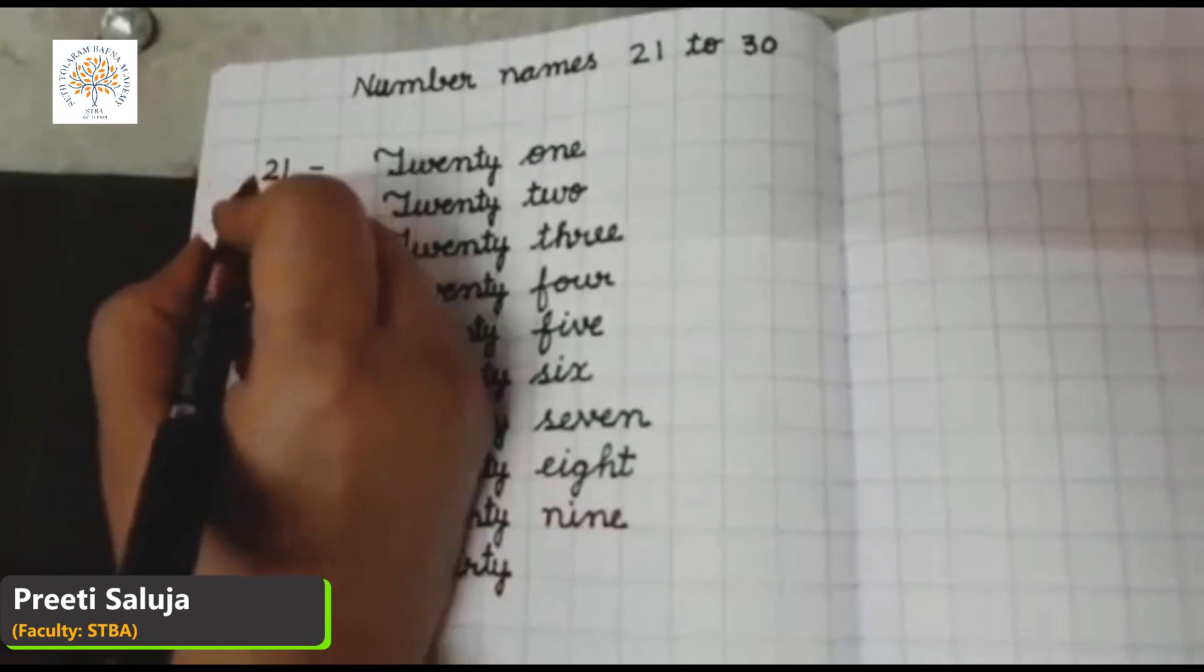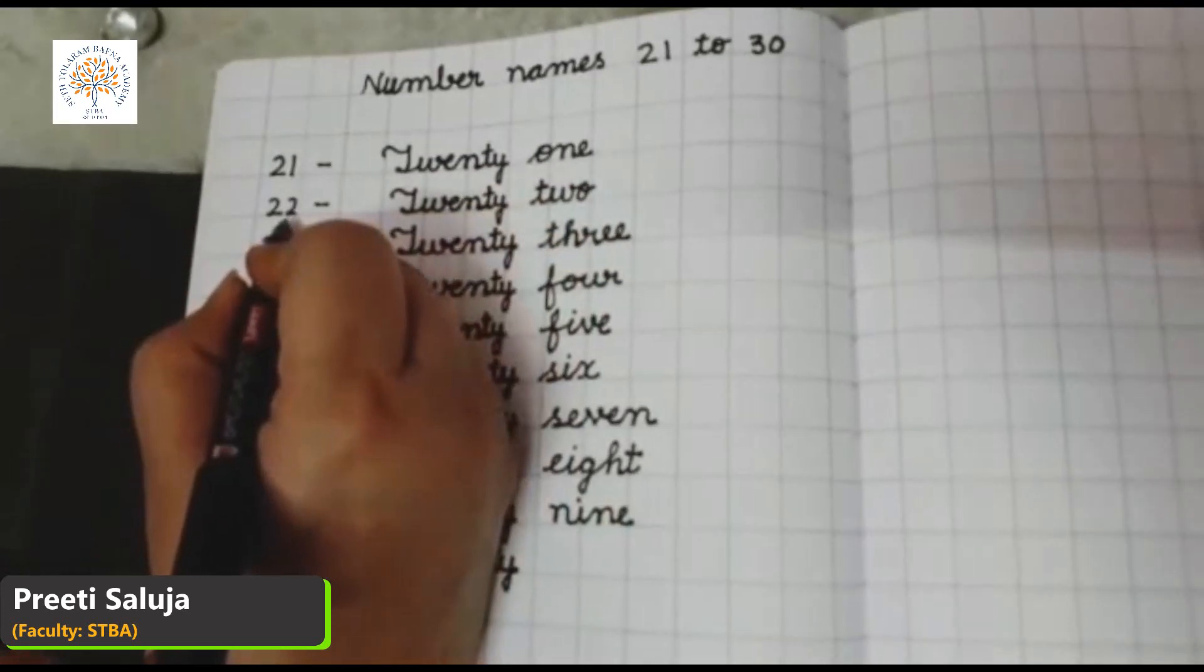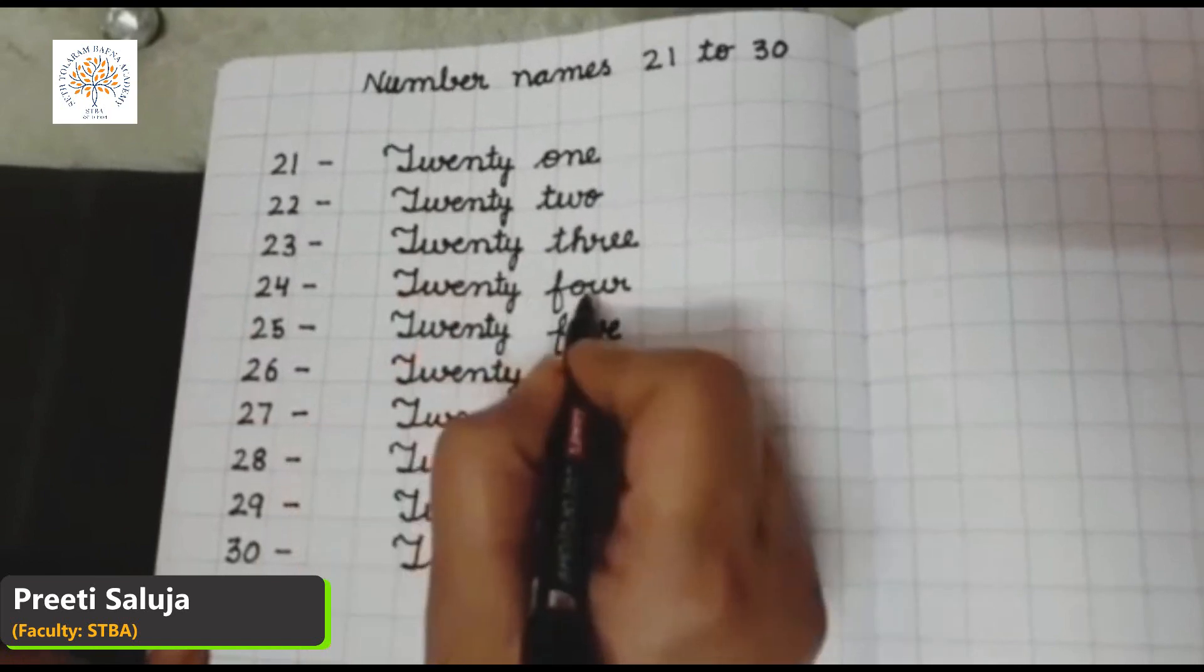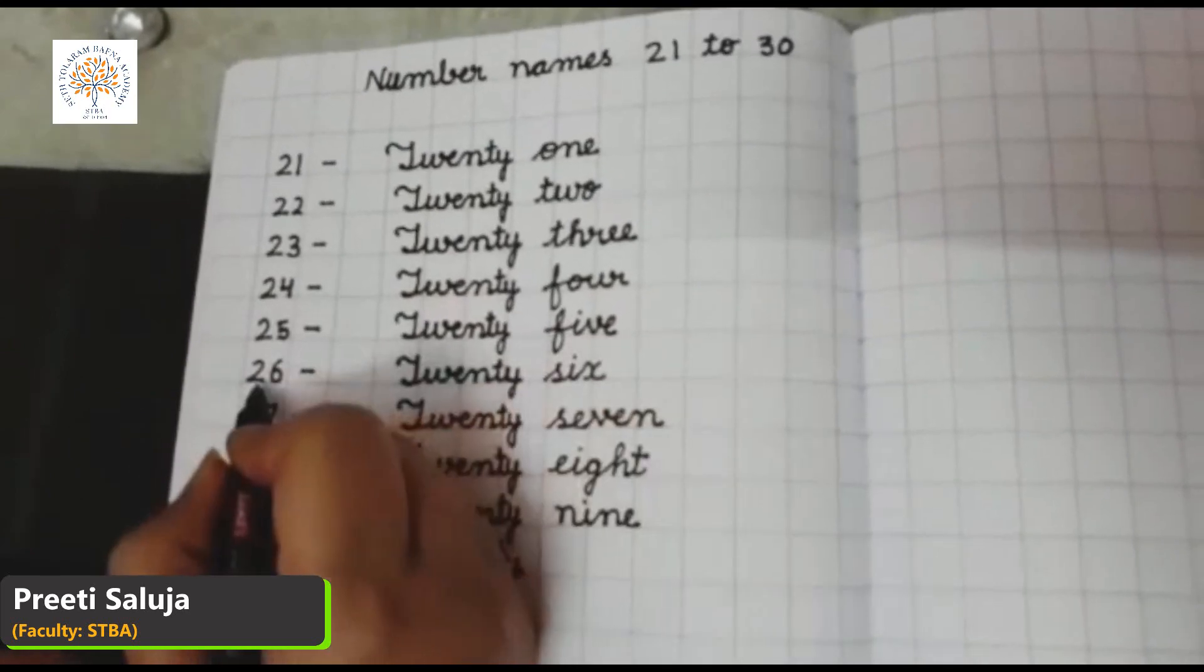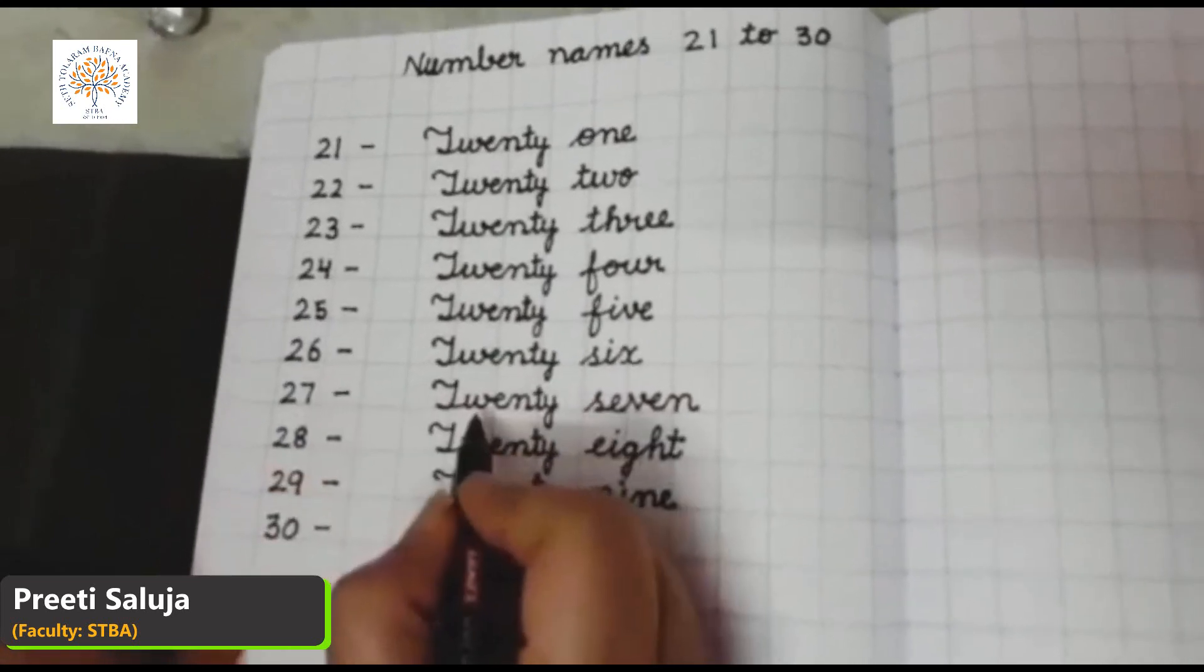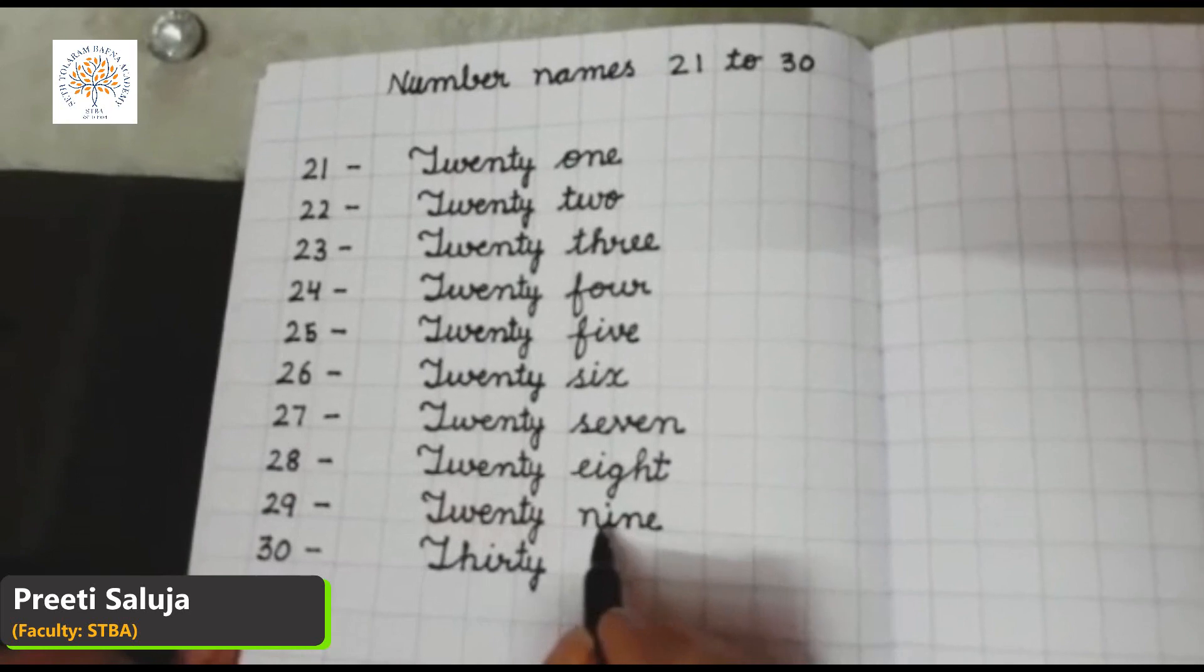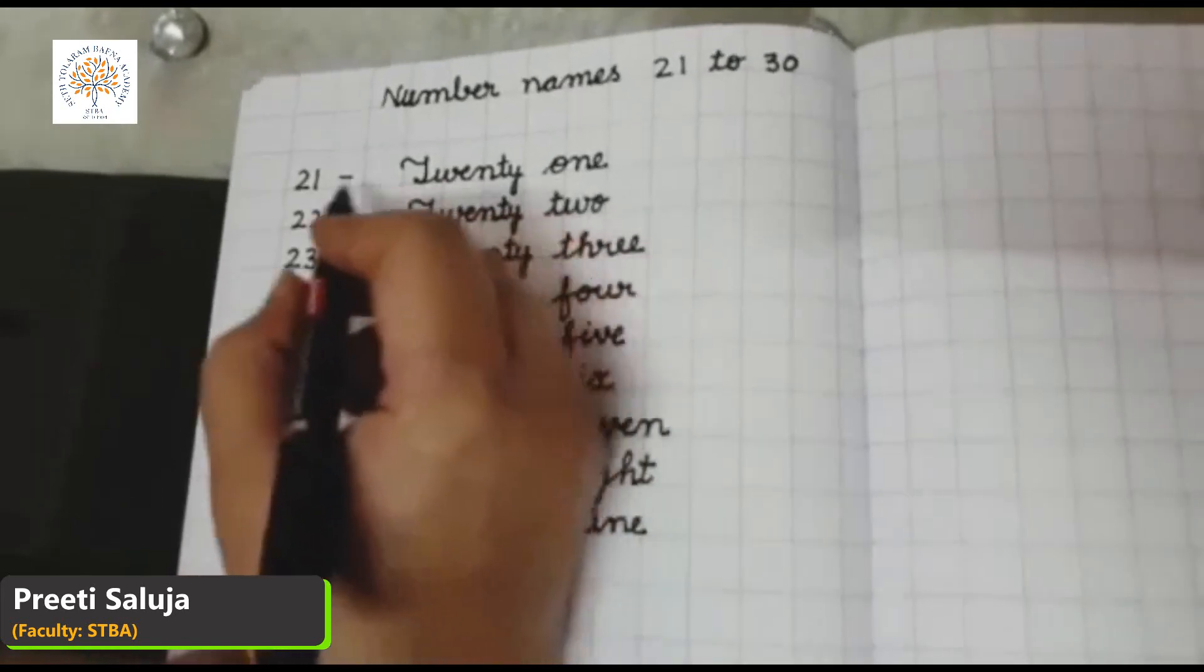Let's revise it. 21, 22, 23, 24, 25, 26, 27, 28, 29, 30.